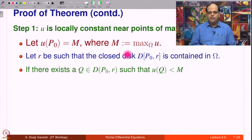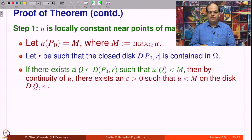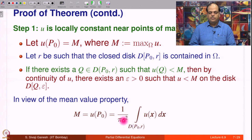Suppose u(q) < M. By continuity of u, there is a closed disk around q on which the function remains strictly less than M. By the mean value property, M = u(p₀) equals the average of u over the disk D(p₀, r). This is the integral of u over the disk divided by the area pi r².